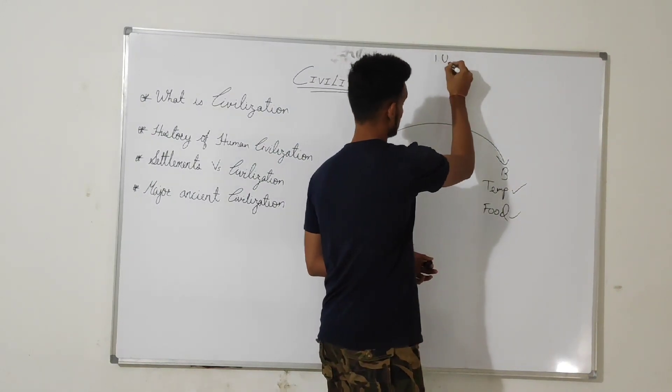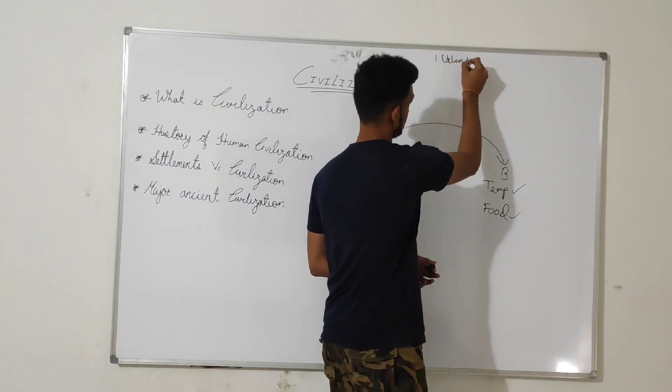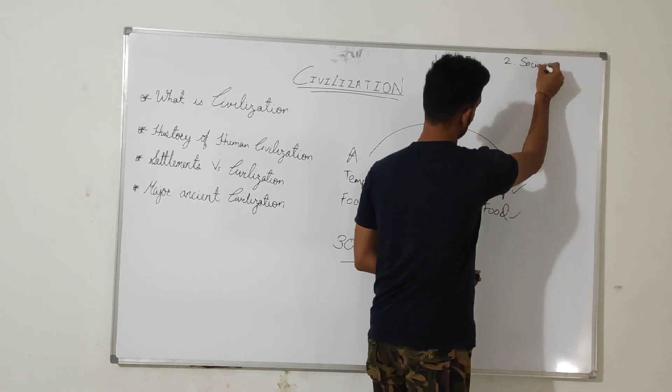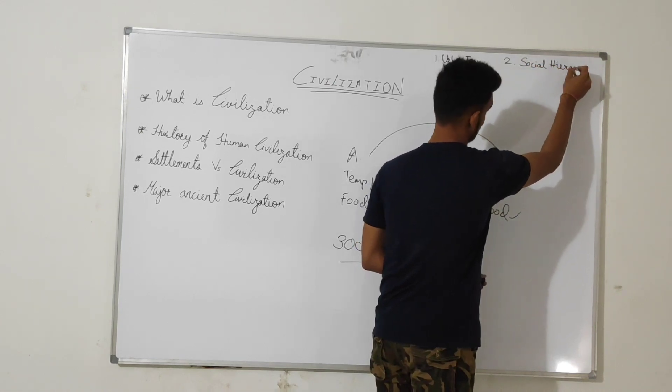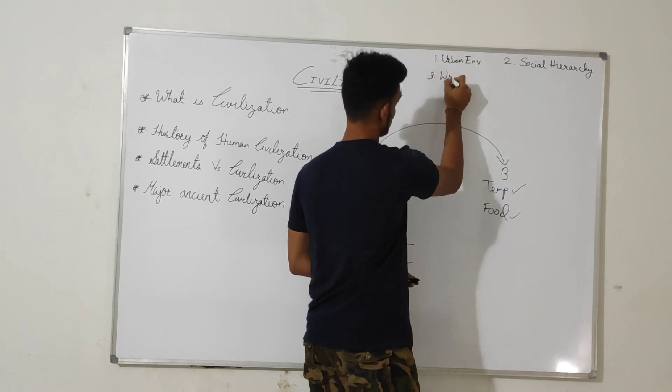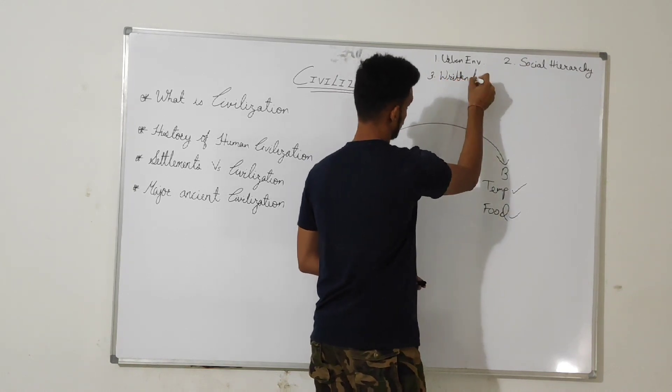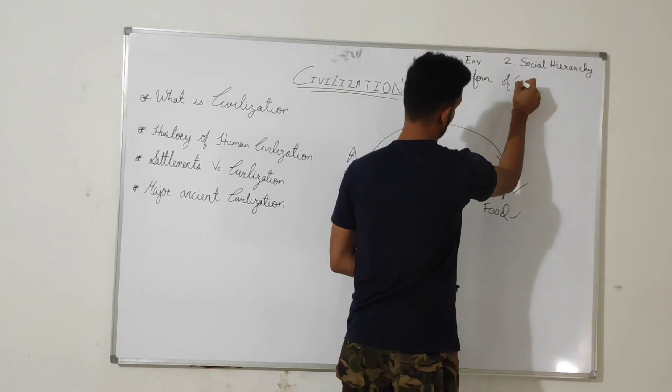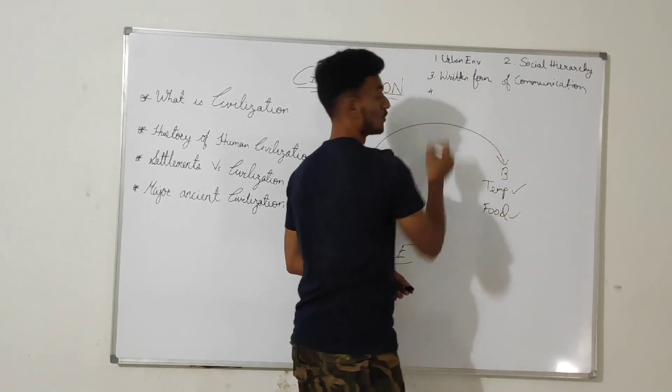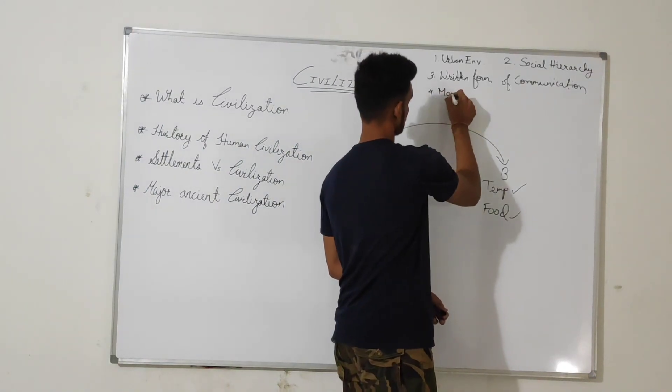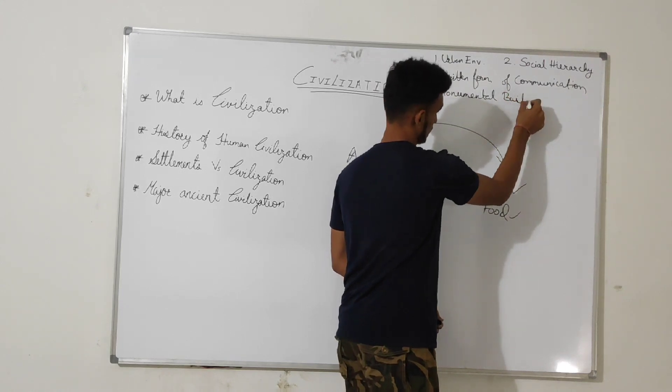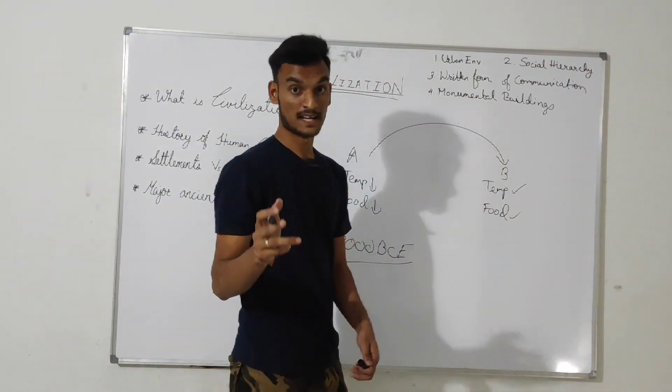First thing, a dense urban environment. Second is social hierarchy. Third is written form of communication. Fourth is monumental buildings. And fifth is dependence on agriculture.